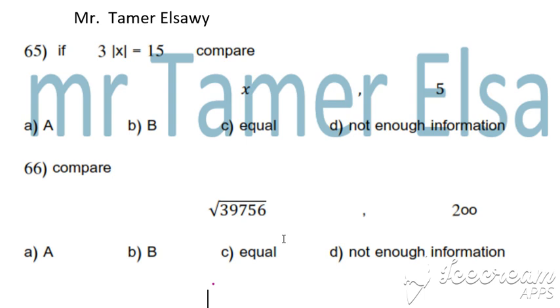Problem 65: If 3|x| = 15, compare x or 5. This is a tricky question.